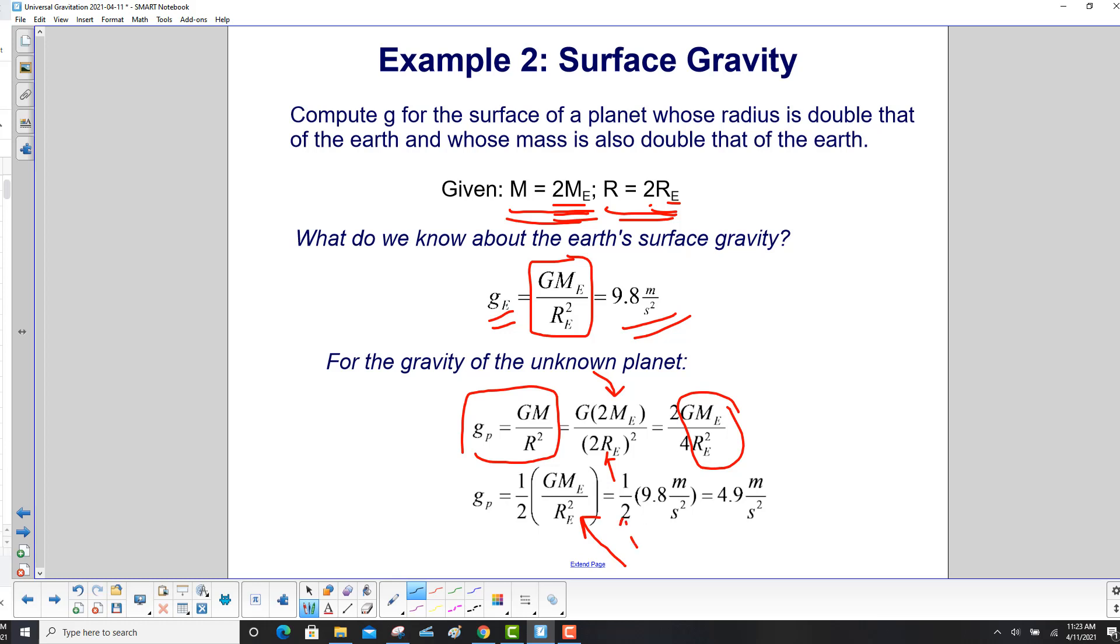So we keep a half over here. And what is GM e over R e squared? That's 9.8 meters per second squared. So a half of 9.8 meters per second squared is 4.9 meters per second squared. That's our answer.